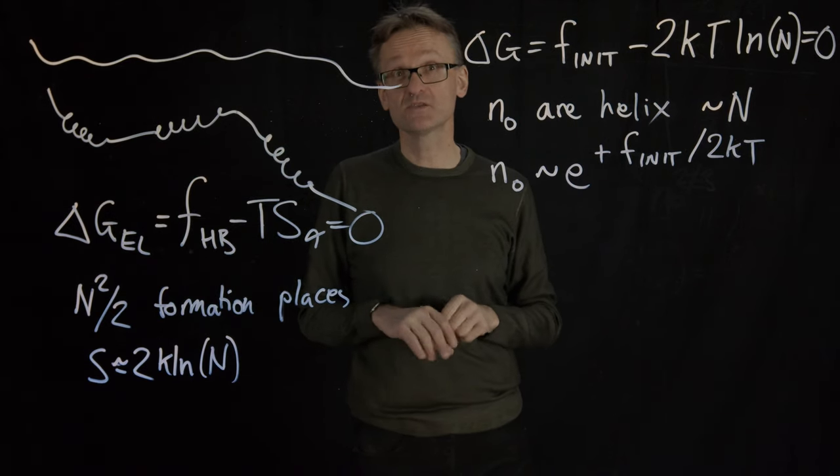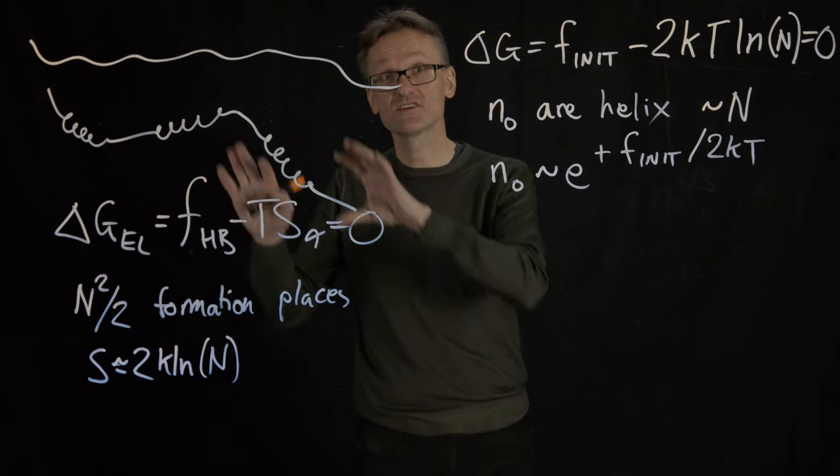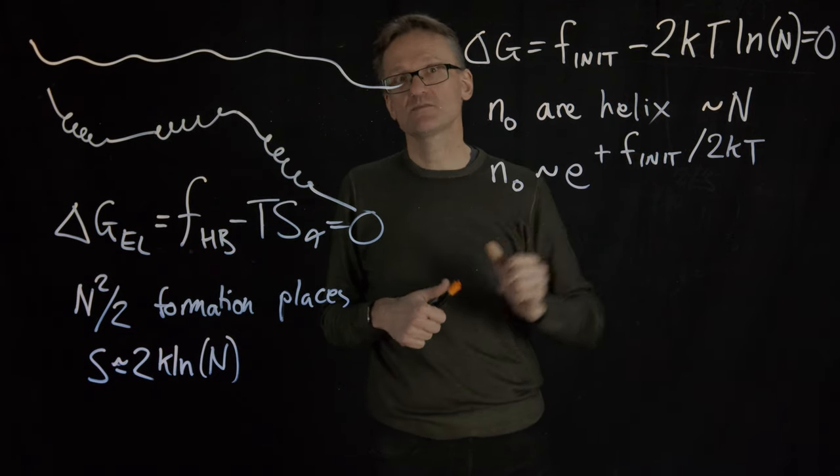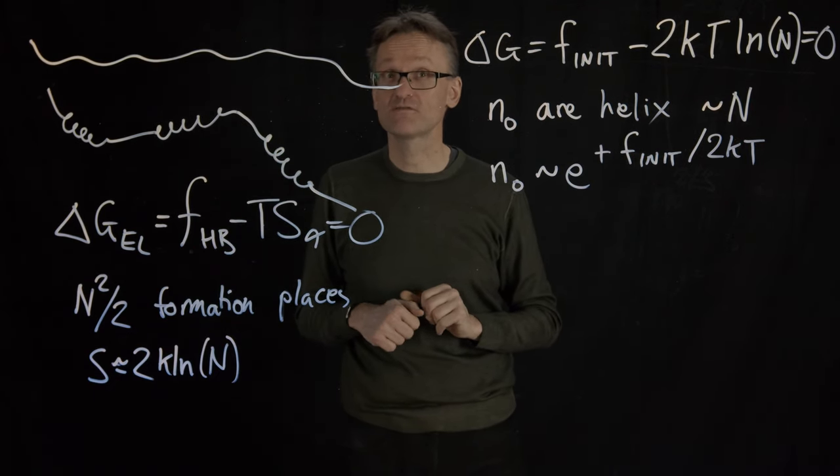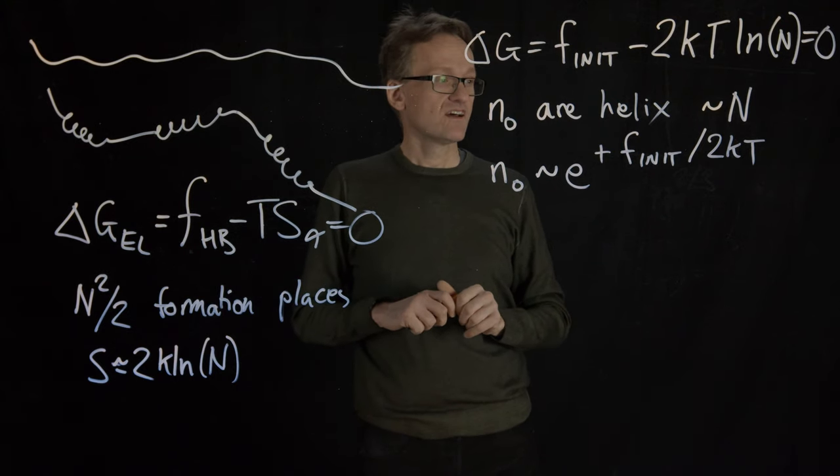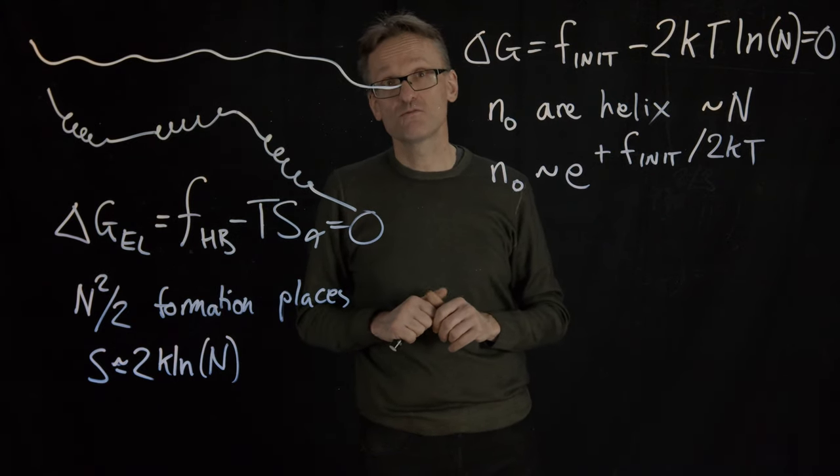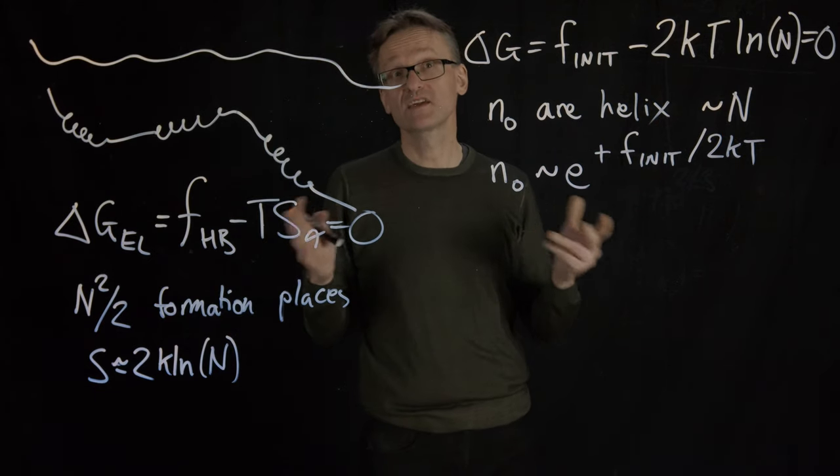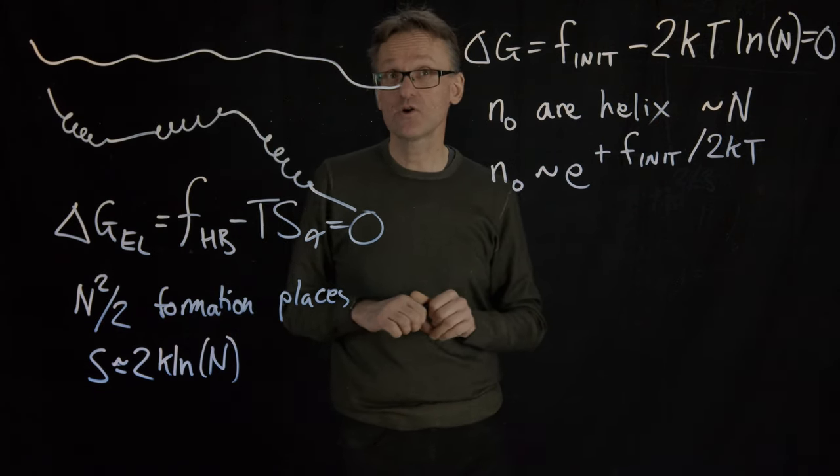But if I know n, I can calculate f_init. So from that simple CD spectroscopy experiment and a very simple, say, pure polyalanine helix, I can estimate what the initiation free energy for an alpha helix is. And it turns out that it's going to be roughly in the ballpark of say two hydrogen bonds or so, maybe 4 kcal. So it's a relatively low energy.